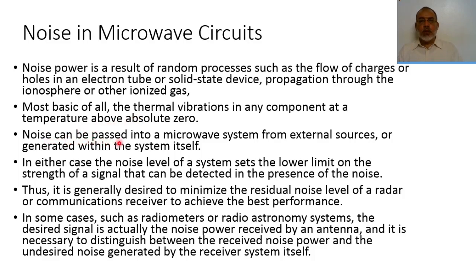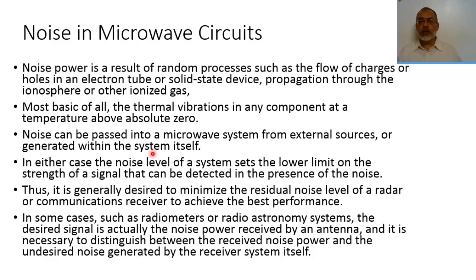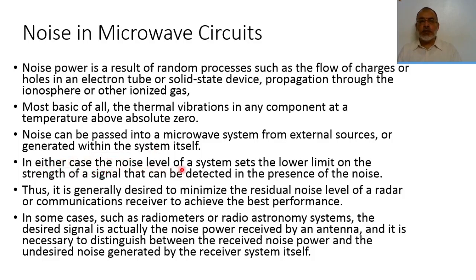Noise can be passed into a microwave system from external sources or generated within the system itself. External noise comes from outside the system and enters through coupling or through the antenna. Internal noise is introduced inside the microwave circuit itself. The noise limit of the system sets the lower limit on the strength of the signal that can be detected in the presence of noise.